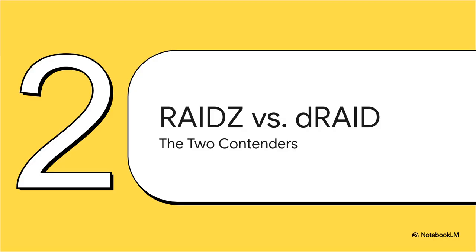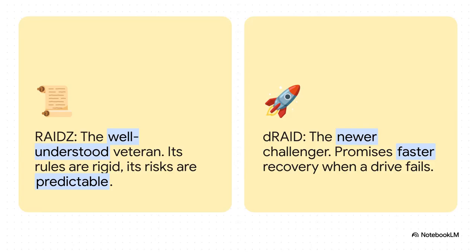And that brings us to the main event. In one corner, you've got RAID-Z — the seasoned veteran, the one everybody knows. In the other corner, you have DRAID, the newer kid on the block, that promises to fix some of RAID-Z's biggest problems, especially at this kind of scale. RAID-Z has rigid rules; its risks are well-known and predictable. DRAID, on the other hand, is the challenger, built on one huge promise: way faster recovery times when a drive dies.